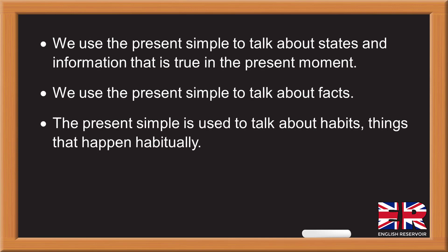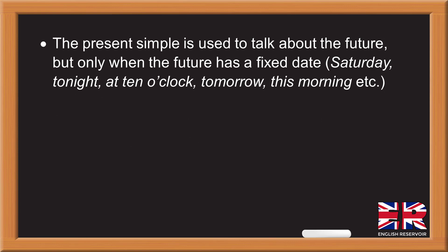We use the present simple to talk about states and information that is true in the present moment. We use it to talk about facts. The present simple is also used to talk about habits — things that happen habitually. Additionally, the present simple is used to talk about the future, but only when the future has a fixed date: Saturday, tonight at 10 o'clock, tomorrow, this morning, etc.